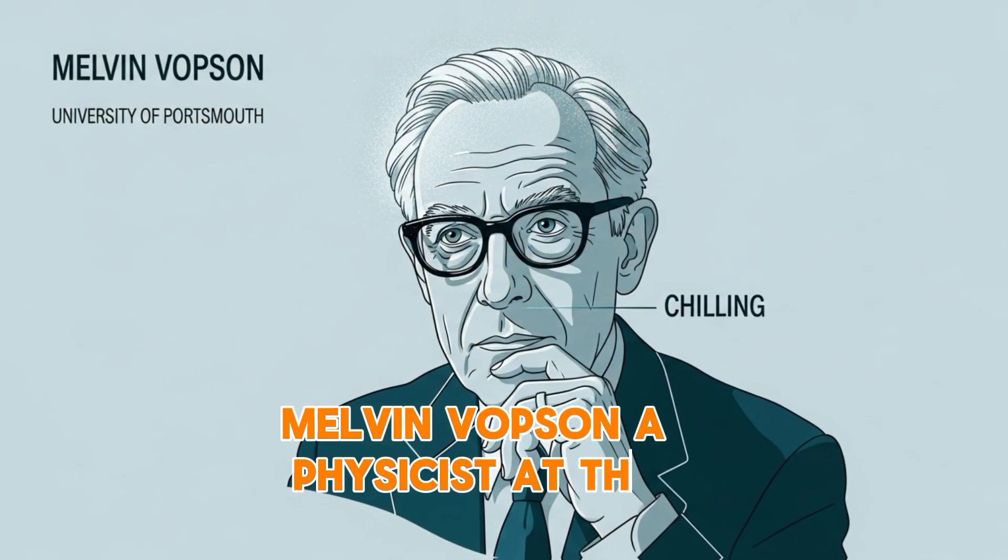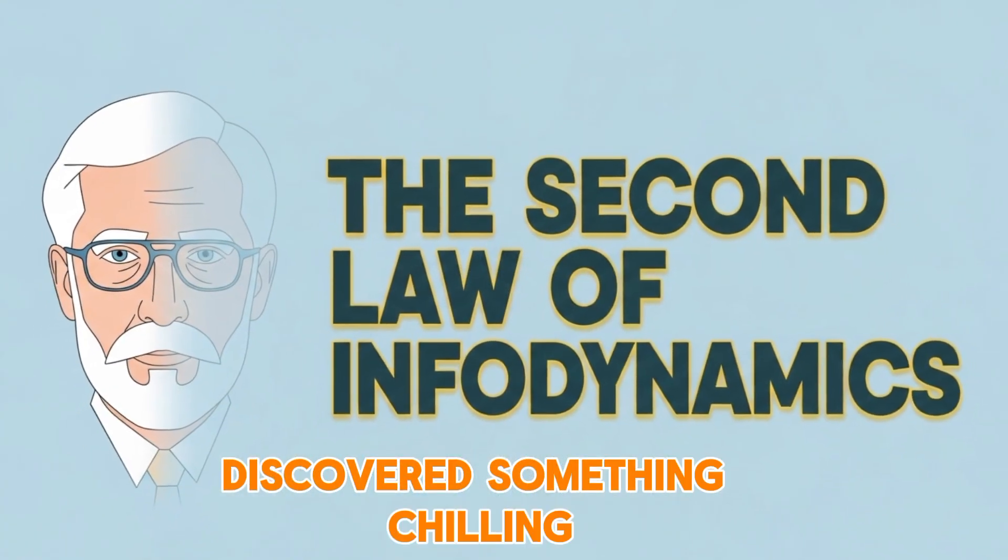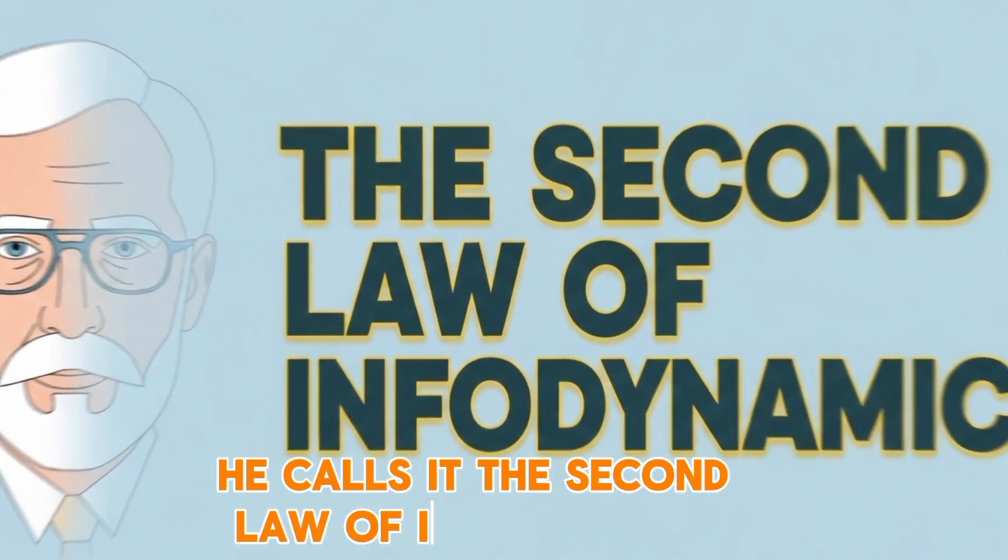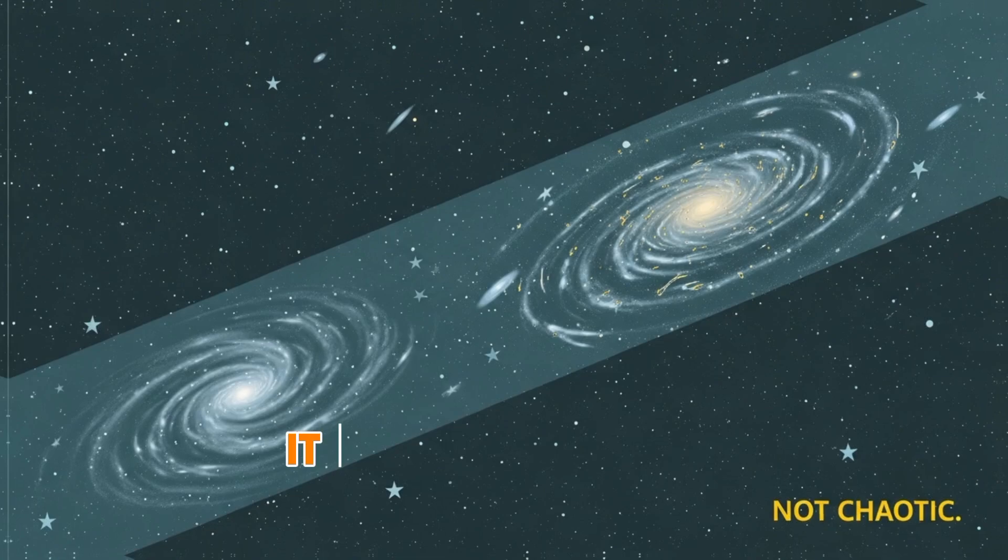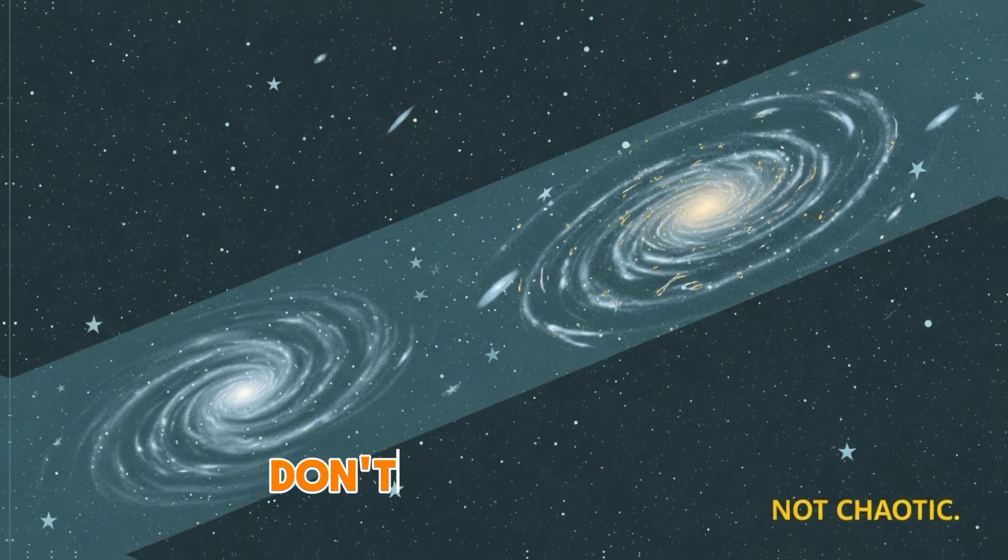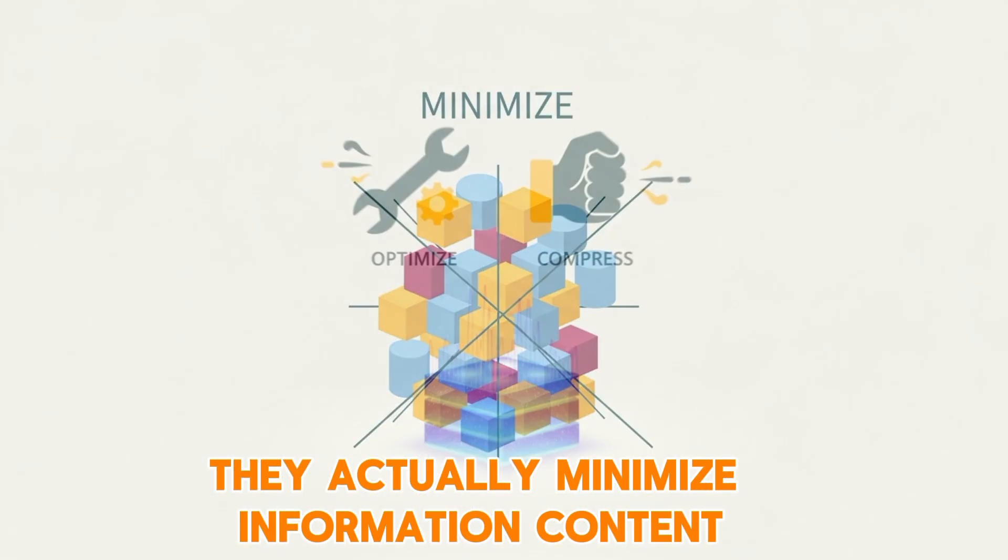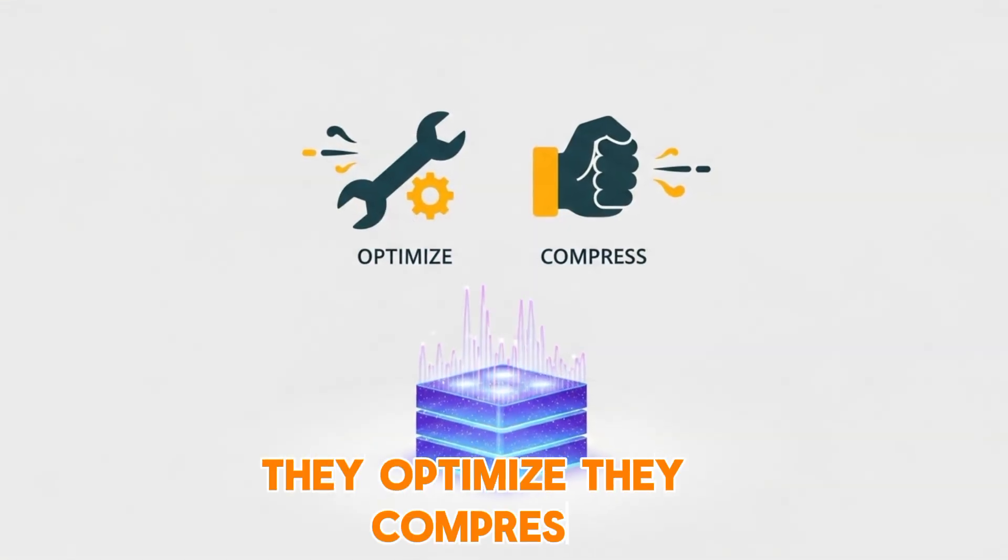Melvin Vopsin, a physicist at the University of Portsmouth, discovered something chilling. He calls it the second law of infodynamics. It suggests that information systems, like our universe, don't grow more chaotic over time. They actually minimize information content. They optimize. They compress.